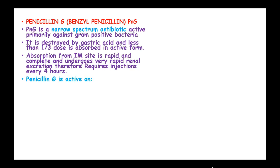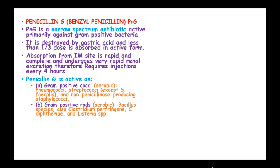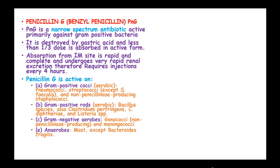Penicillin G is active on gram-positive cocci such as pneumococci, streptococci, and non-penicillinase-producing staphylococci, except Staphylococcus faecalis. It is active against gram-positive rods which are aerobic, like Bacillus species, Clostridium perfringens, Corynebacterium diphtheriae and Listeria species. Also gram-negative aerobes such as gonococci and meningococci, anaerobes mostly except Bacteroides fragilis, and it is also active against spirochaetes including Treponema pallidum and Leptospira species.